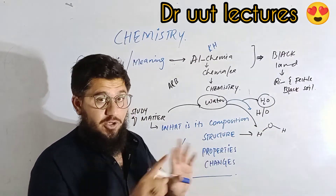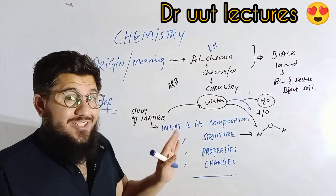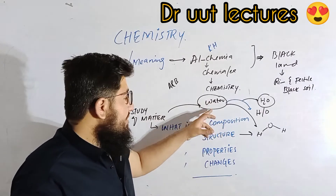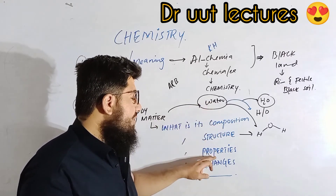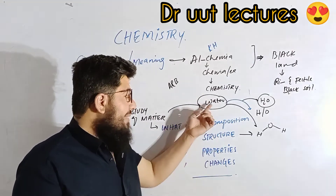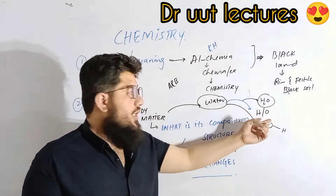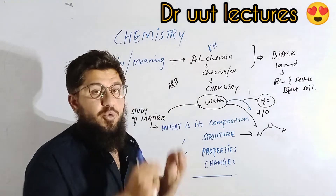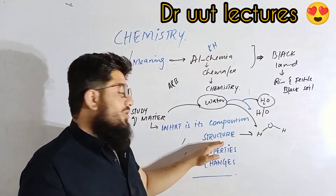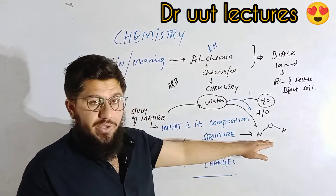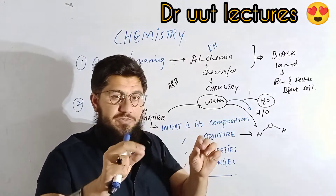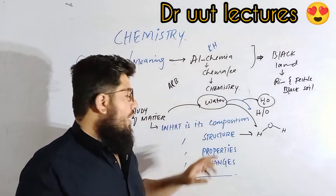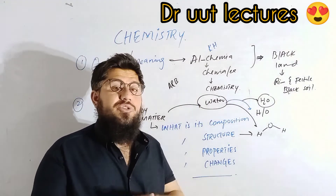Note that the lone pairs are missing in the structure I have drawn — let me know in the comment box if you know what lone pairs are and how many lone pairs are missing from this structure. Regardless, in chemistry we study matter through its composition, structure, and properties. The composition of water: it is composed of hydrogen and oxygen, which we get from the formula H₂O — two hydrogens and one oxygen. The V-shaped drawing represents the structural formula.